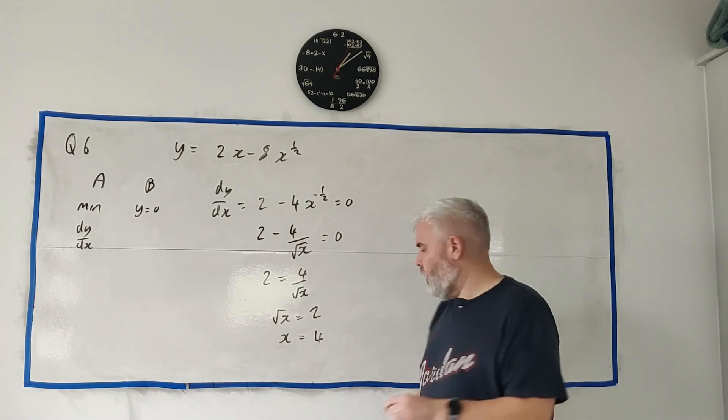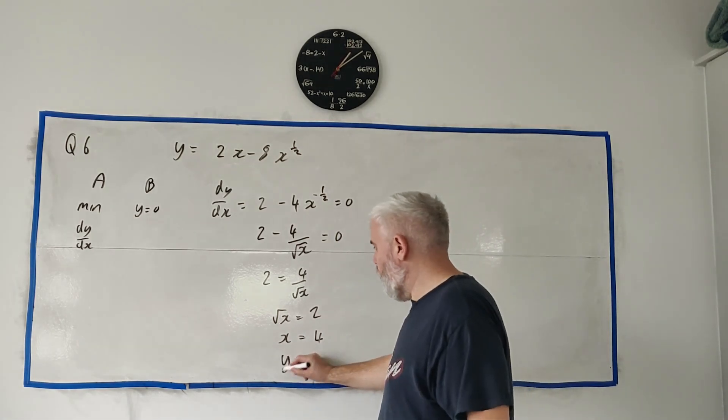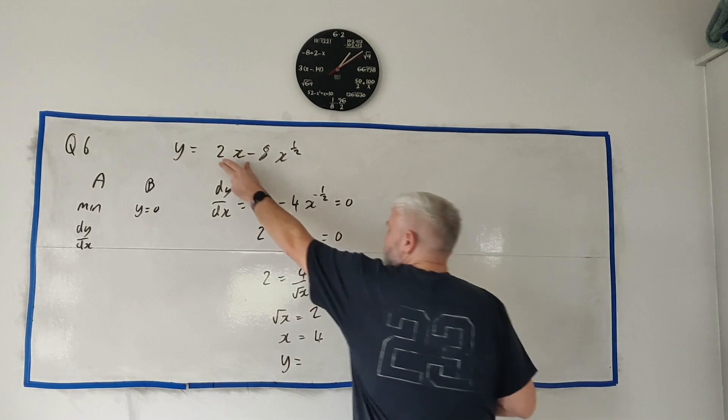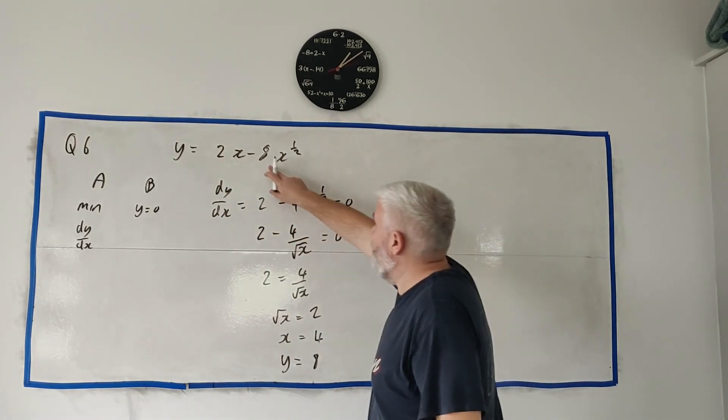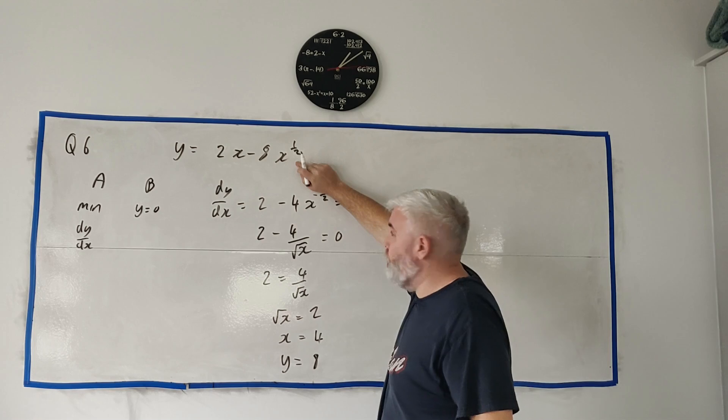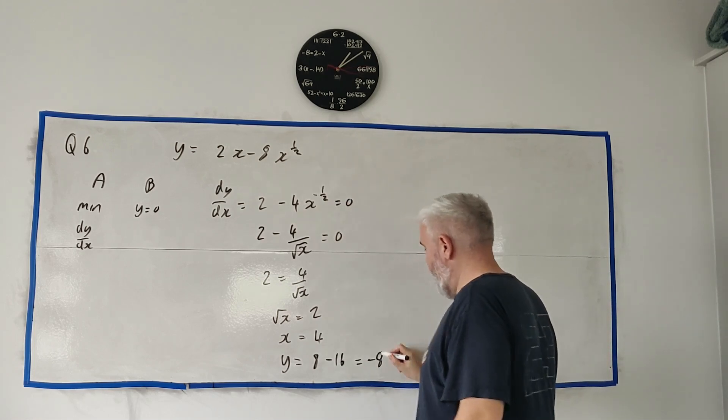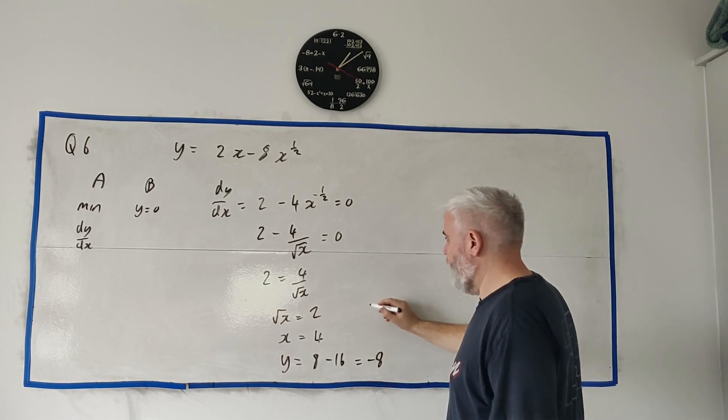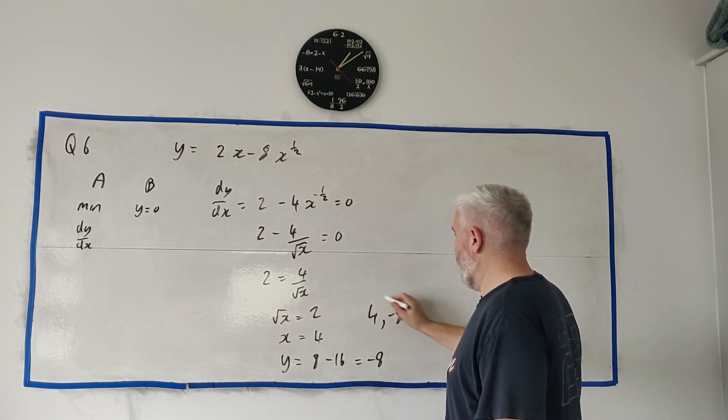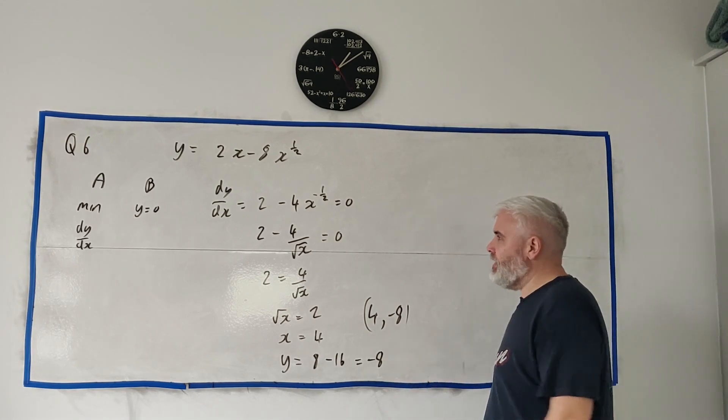They wanted the coordinates not just x. So I do want to know y. Y is equal to, let's see, 2 times 4 is 8 minus square root of 4 is 2, so minus 16. So that's equal to minus 8. And the coordinate there is (4, -8). Okay, that's A.